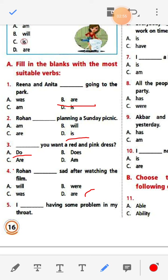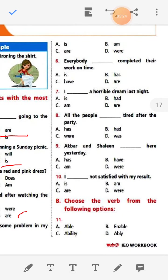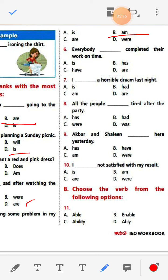Number four: Rohan dash sad after watching the film. The answer is 'was' — Rohan was sad after watching the film. Number five: I dash having some problem in my throat. With 'I' we always use 'am', so: I am having some problem in my throat.